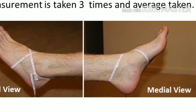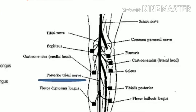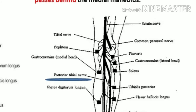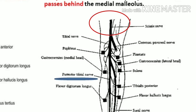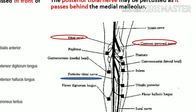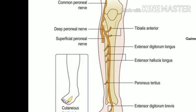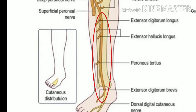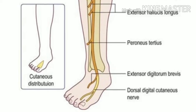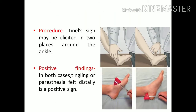The nerve supply of the lower limb comes from the sciatic nerve, which branches into the tibial nerve and the common peroneal nerve. The posterior tibial nerve (branch of tibial nerve) supplies the posterior part of the foot, and the deep branch of the common peroneal nerve supplies the anterior part. The patient lies supine with the knee flexed. Both the anterior and lateral sides are checked manually and then with a reflex hammer. A Tinel's sign is elicited — if there is tingling or paresthesia, it indicates a positive sign for neural involvement.